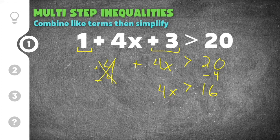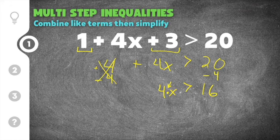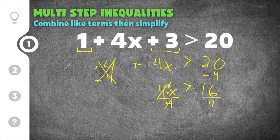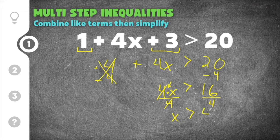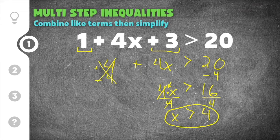Now we have to get rid of the coefficient on x. We have 4x is greater than 16. This 4 is like saying 4 times x, so the opposite of multiplication is division. The opposite of 4 times x is to divide by 4. The 4's cancel and I also have to divide by 4 on the other side. On the left side we're left with just x because the 4's cancel, our greater than symbol did not change, and 16 divided by 4 is 4. So our solution to this multi-step inequality is x is greater than 4.